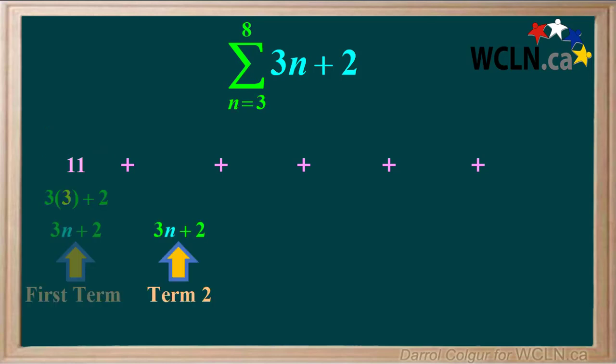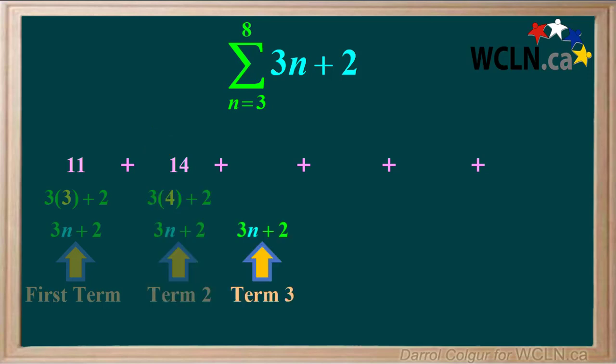To find term 2, we'll start with the function 3n plus 2 again. This time, n is equal to the next consecutive number after 3, which is 4. So the value is 12 plus 2, or 14. For term 3, we'll start with the same function, and this time n is equal to the next number, which is 5. So the value of term 3 is 15 plus 2, or 17.